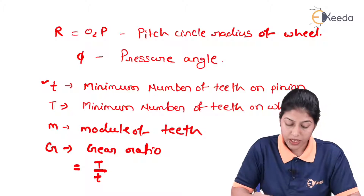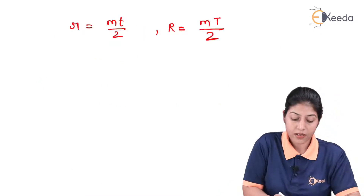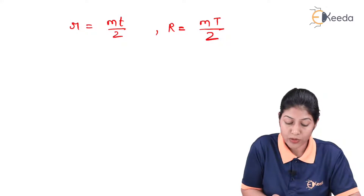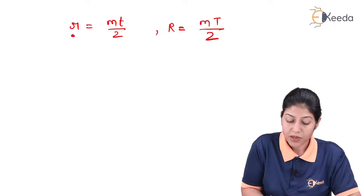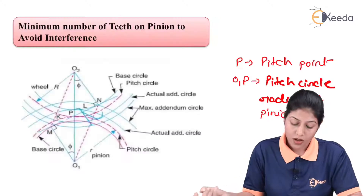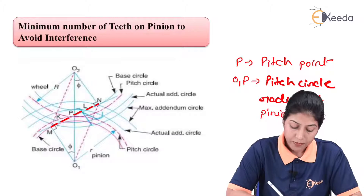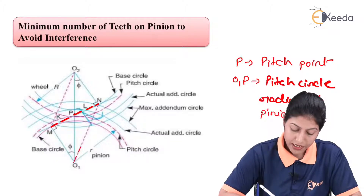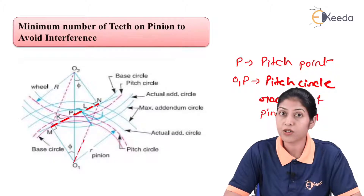On the basis of these terms we will define the minimum number of teeth on the pinion. The pitch circle radii are: r = mt/2 and R = mT/2. Here mn is the maximum length of contact, P is the pitch point, O1 and O2 are the centers. O1N represents the maximum radius of the addendum circle of the pinion, and O2M represents the maximum radius of the addendum circle of the wheel. Let us now consider two triangles: triangle O1NP and triangle O2MP.